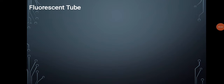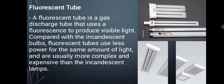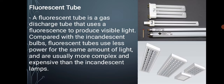Number six is fluorescent tube. A fluorescent tube is a gas discharge lamp that uses fluorescence to produce visible light. Compared with the incandescent bulb, fluorescent tubes use less power for the same amount of light and are usually more complex and expensive than incandescent lamps. Fluorescent lamps do not have good color representation ability, but these tubes are cool in appearance and color. Fluorescent tubes can be used in many places around the home, but cannot be used with dimmers.